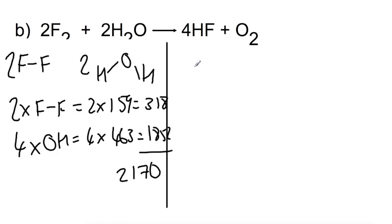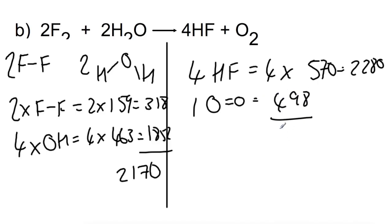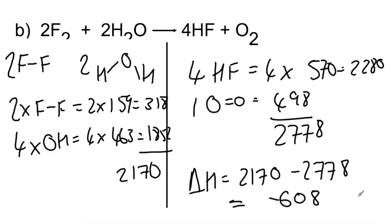And then we're making four HF bonds. So that's 2280 and one oxygen double bond, which is 498, giving us a total of 2778. Delta H is breaking minus making, giving us an overall enthalpy change of minus 608 kilojoules per mole.